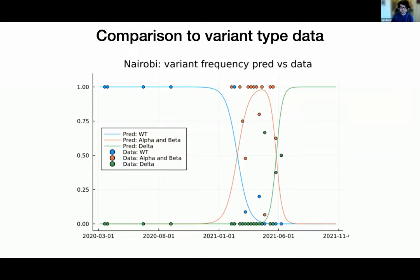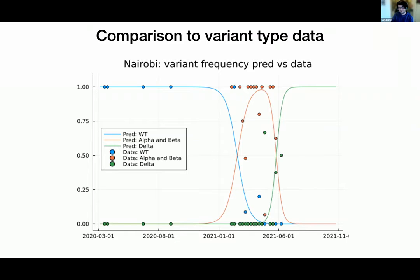The first was Delta. We compared what the model predicted the variant frequency should be by back-tracing how much the case rate had gone up, against variant frequency data from Nairobi — about n=600 samples. Blue represents old strains, then Alpha was mainly in Nairobi, and then Delta. The model pretty much lines up with the data, meaning variants themselves were a sufficient explanation for the surges.